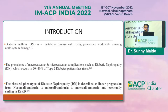Coming to the introduction, diabetes mellitus is a metabolic disease with a rising prevalence worldwide causing multi-system damage. The prevalence of macro and microvascular complications such as diabetic nephropathy, which occurs in around 20 to 40% of type 2 diabetes patients, has risen worldwide. The classical phenotype of diabetic nephropathy is described as the linear progression from normal albuminuria to microalbuminuria to macroalbuminuria, eventually ending in end-stage renal disease.